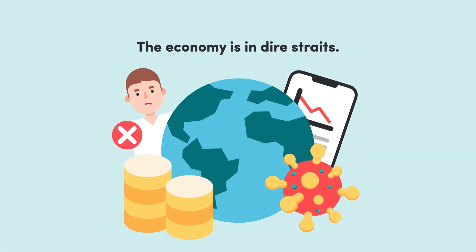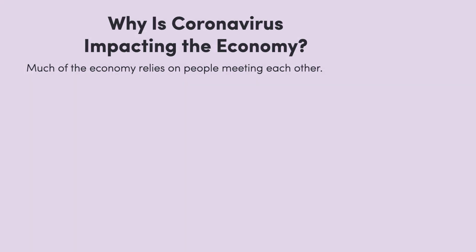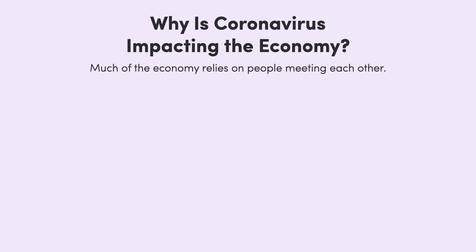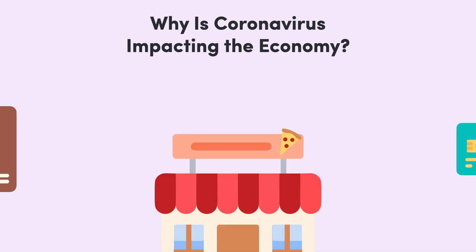But how does any of this relate to the coronavirus? Well, to put it plainly, many parts of the economy rely on people meeting each other and exchanging goods, services, and skills. But this is also how the virus is transmitted. So to stop the virus, we have to stop part of the economy.